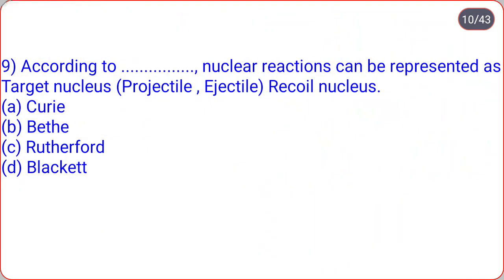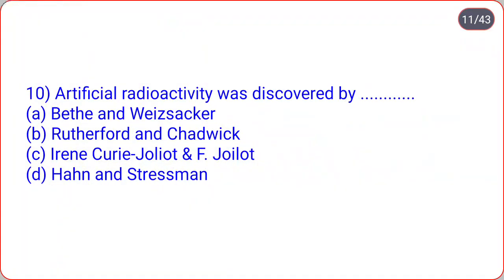The next: according to dot-dot, nuclear reactions can be represented as — target nucleus, in simple bracket, projectile comma ejectile, bracket complete, recoil nucleus. So this representation was given by scientist B.T. According to B.T., nuclear reactions can be represented with target nucleus, then in brackets projectile and ejectile, then recoil nucleus. Correct option is B.